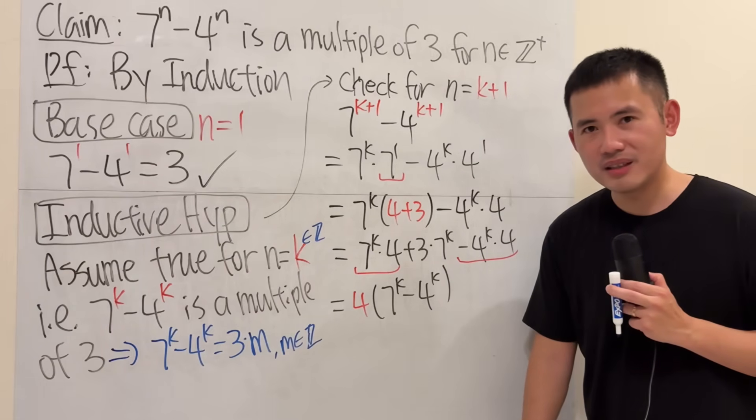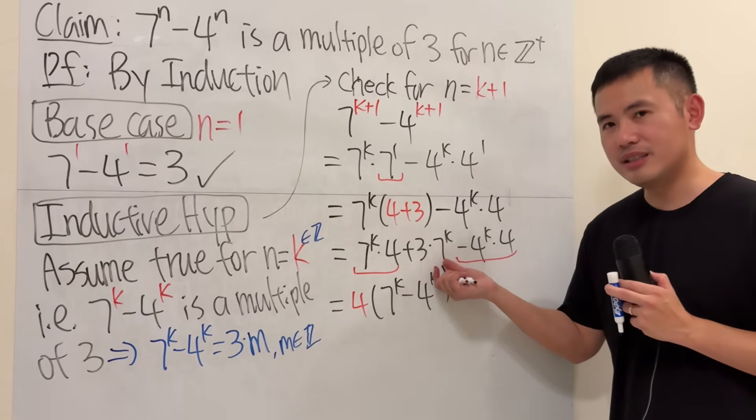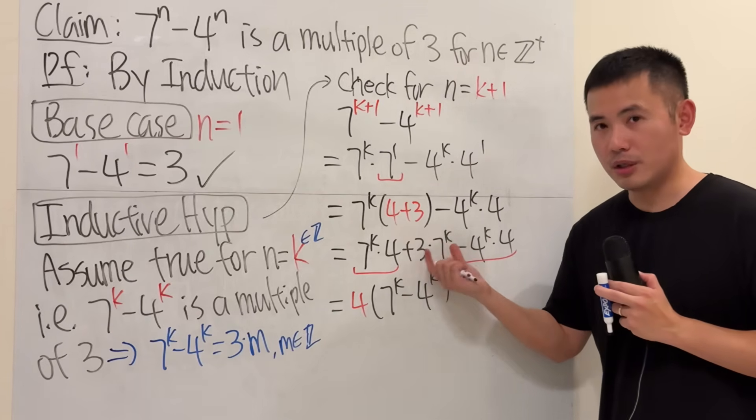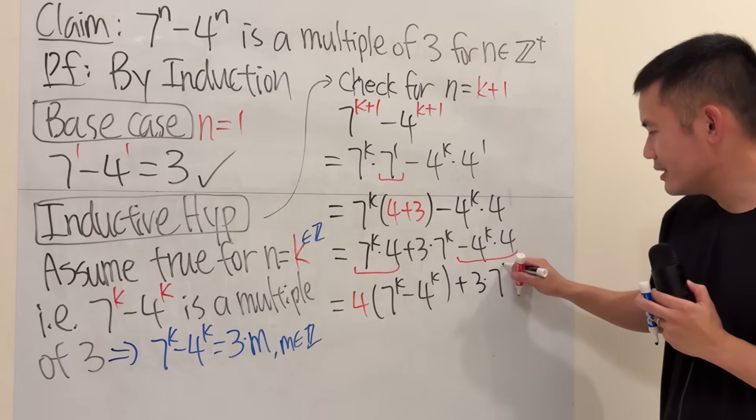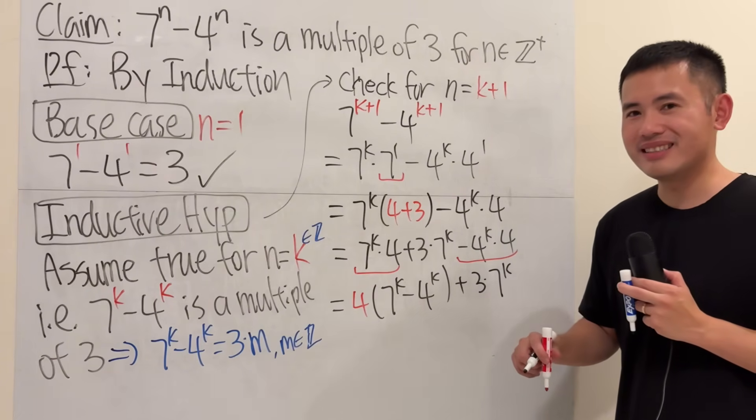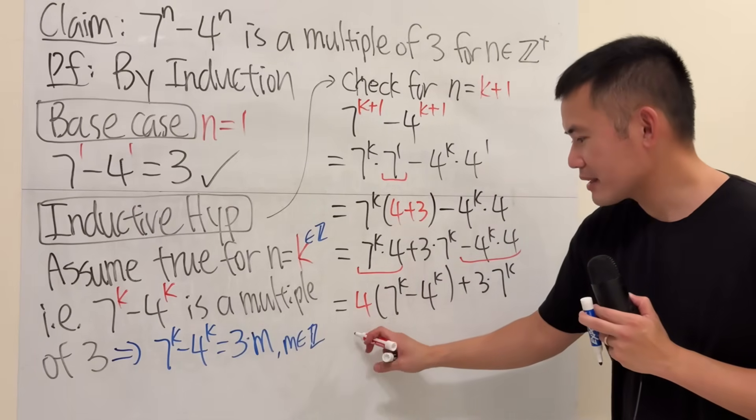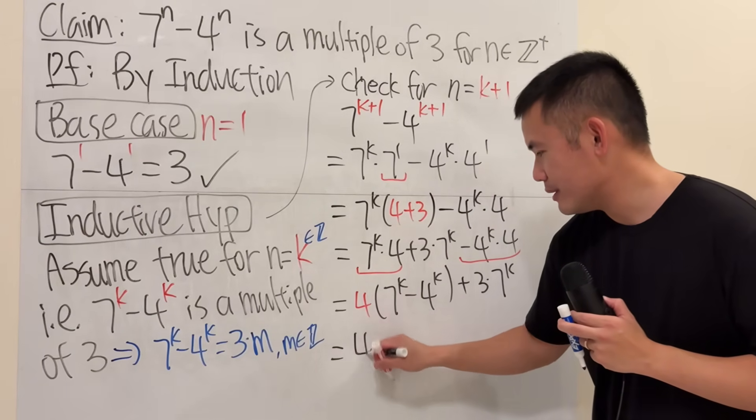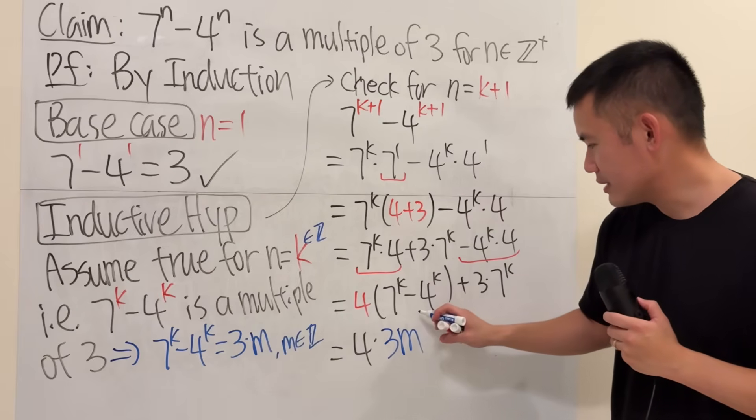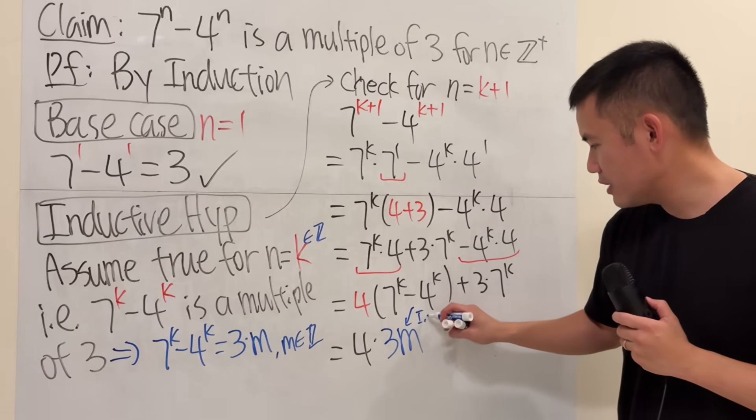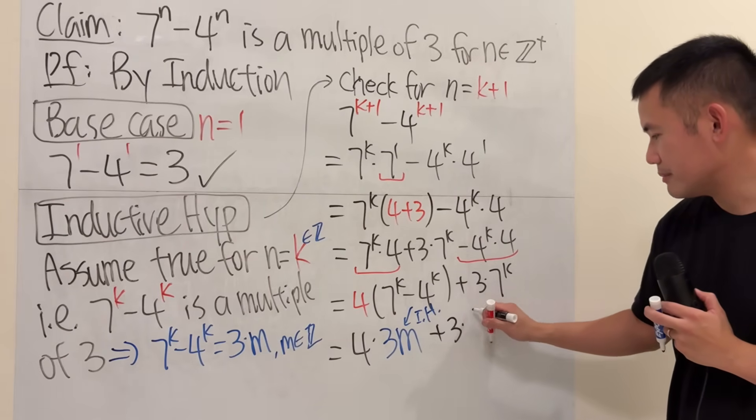But you know what's better? This part, it's already 3 times some integer. So it's already a multiple of 3. So if we attach a multiple of 3, it's not going to ruin anything. Now, this right here is 3m. Not the company 3M, it's just 3m. So I'm going to replace that with 3m. And you can say this is because of the inductive hypothesis. And then, plus 3 times 7 to the k.